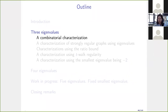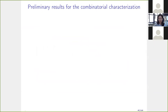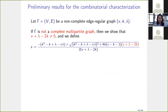The first characterization has a combinatorial flavor. For an uncomplete edge-regular graph with parameters (v, k, λ), we define the clique order s using a quadratic expression depending on this triplet. It is important to note that complete multipartite graphs are characterized by when this expression equals zero. We also define the nexus e as an expression involving s, k, and v. These are preliminary results needed before we can state the main combinatorial characterization theorem.